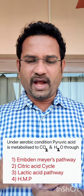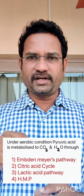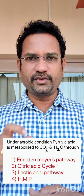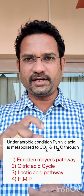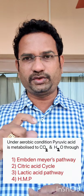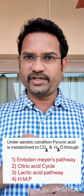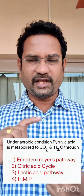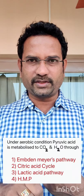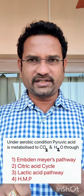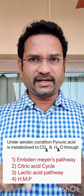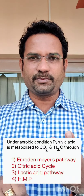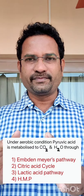Look at the question. Under aerobic condition, pyruvic acid is converted to carbon dioxide and water through which pathway? Options are given as: Embden-Meyerhof pathway, citric acid cycle, lactic acid pathway, and hexose monophosphate shunt (HMP shunt).